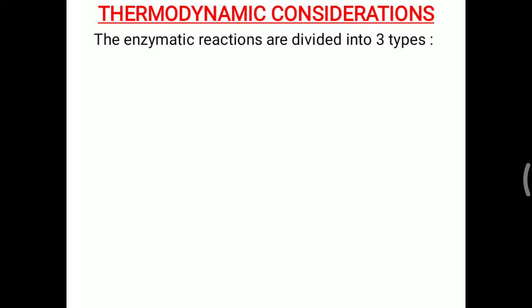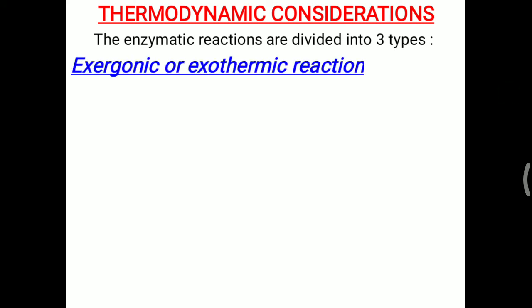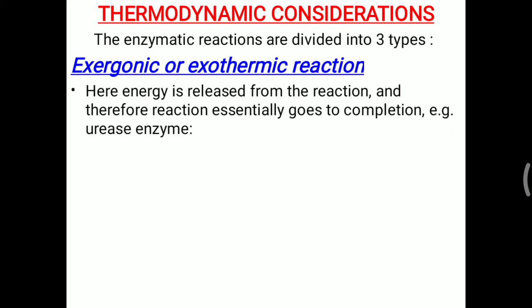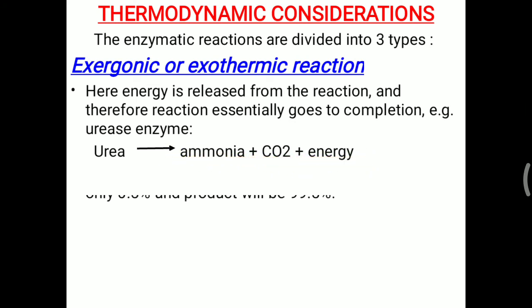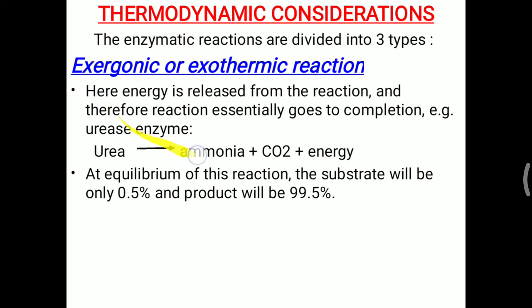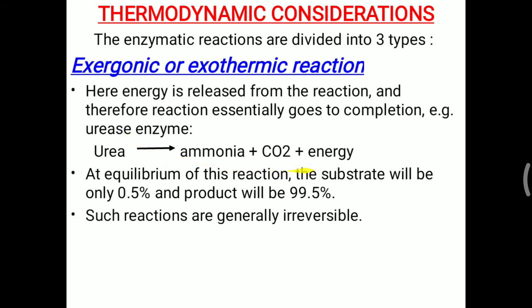Furthermore, you have to remember the thermodynamic considerations in enzyme theory. Enzymatic reactions are divided into three types. First is exergonic or exothermic reactions, where energy is released from the reaction and the reaction essentially goes to completion. A simple example is the urease enzyme: urea is converted into ammonia plus carbon dioxide and energy is released. At equilibrium in the presence of this enzyme, substrate will be only 0.5% and product will be 99.5%. These reactions are generally irreversible — urease cannot reconvert ammonia and carbon dioxide back into urea.